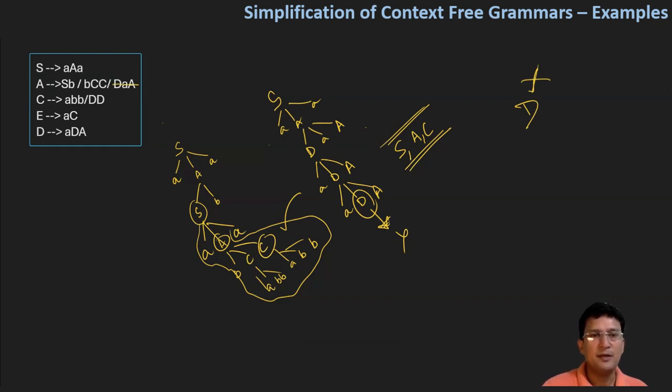So A produces DAB will be removed. C produces DD will be removed, and D produces aDA will be removed. We now have the grammar with these removed productions.